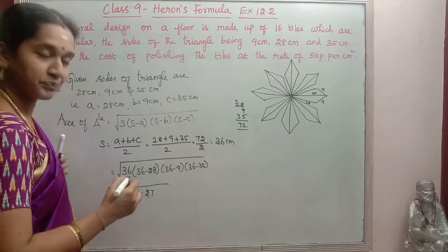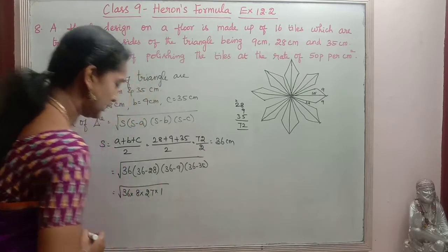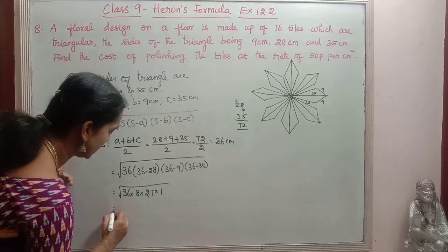We get 27. Into 36 minus 35 is 1. So now we will simplify this.